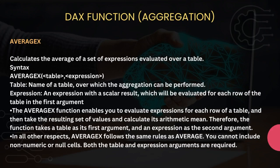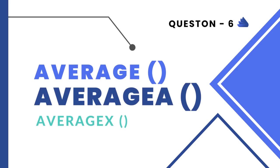AVERAGEX calculates the average of a set of expressions evaluated over a table. The syntax is AVERAGEX(table name, expression) — both the table name and expression arguments are required. Note that AVERAGEX follows the same rules as AVERAGE: you cannot include any non-numeric or null cells.